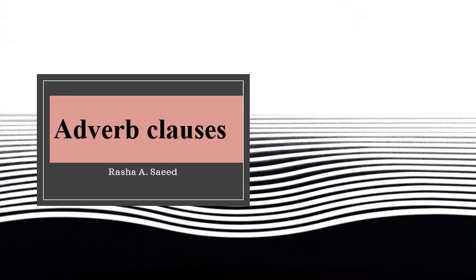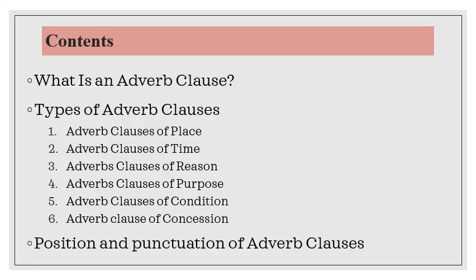Hi everyone. Today our lecture is about the third type of complex sentences, which is adverb clauses. In this presentation, we'll talk about what an adverb clause is, then tackle the six types of adverb clauses: adverb clauses of place, of time, reason, purpose, condition, and concession. Finally, we'll talk about the position and punctuation of adverbial clauses.